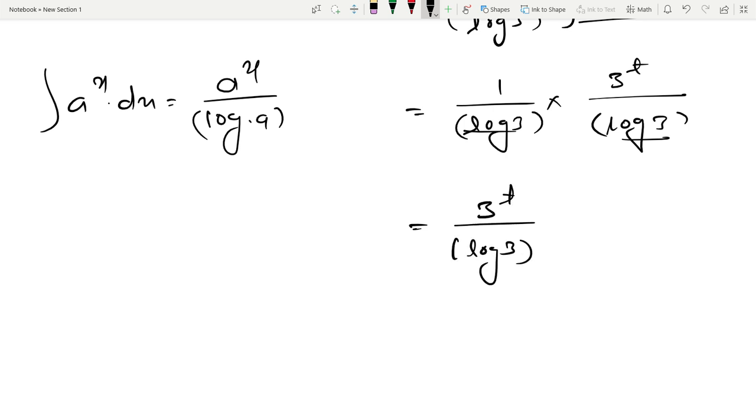3 squared. Since t equals 3 to the power x, the final answer is 3 to the power x divided by log of 3 squared.